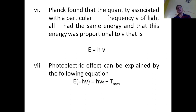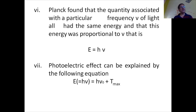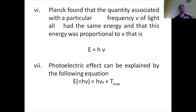The photoelectric effect can be explained on the basis of Einstein's relation: h nu equals h nu naught plus T maximum. Here, h nu is the energy of the electromagnetic radiation falling on the metal surface, nu naught is the threshold frequency, h nu naught is the work function, and T maximum is the kinetic energy taken away by the electrons. Out of h nu falling on the metal surface, h nu naught is used in ejection of the electron, and the difference h nu minus h nu naught is taken away as kinetic energy of the electrons.